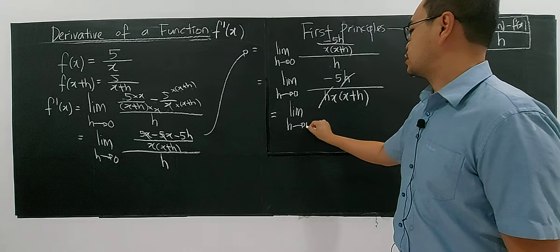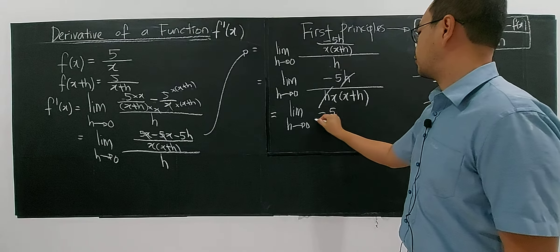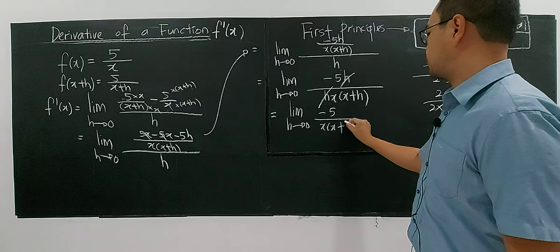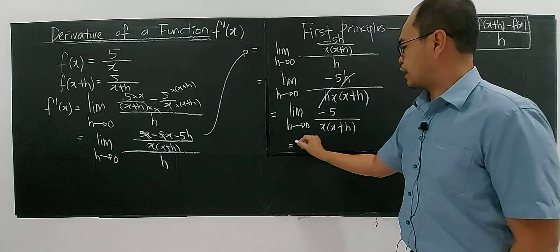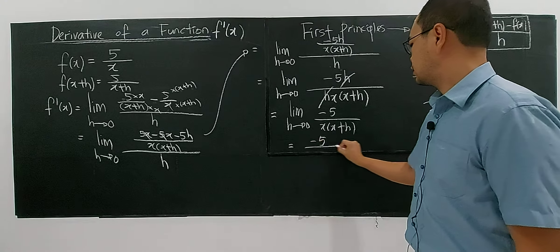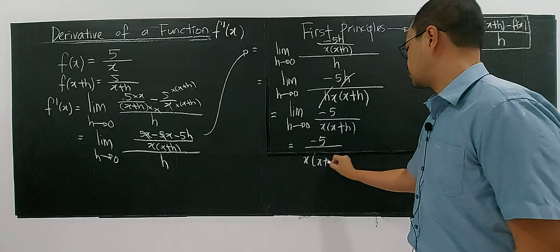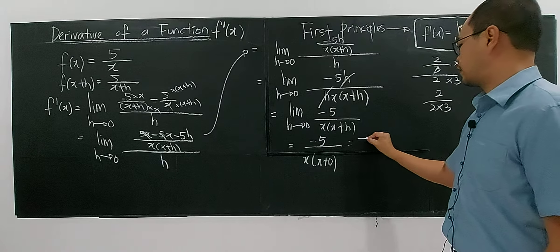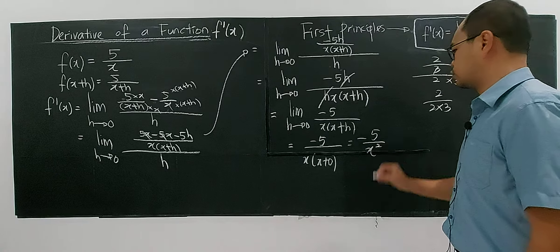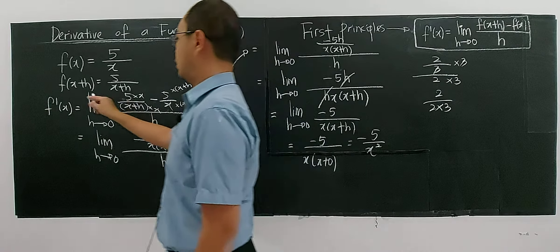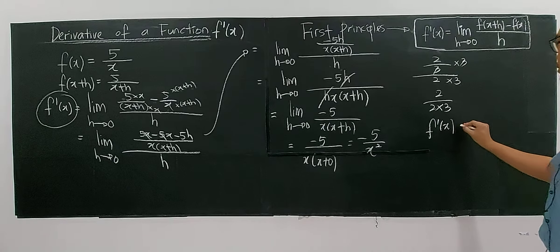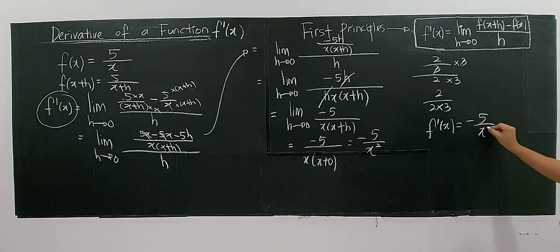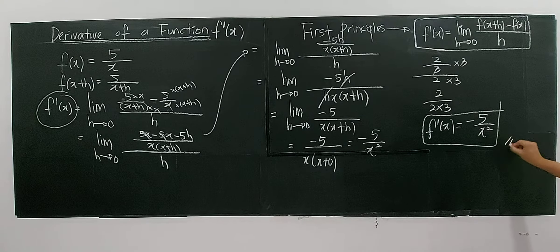After canceling h, I have the limit as h approaches zero of negative 5 over x(x+h). After eliminating h, I can directly substitute zero, giving x(x+0) = x². So the derivative of this function by using the first principle is f'(x) = negative 5 over x². This is how we apply the first principle to a reciprocal function.